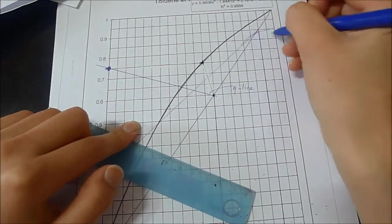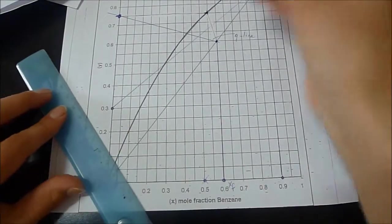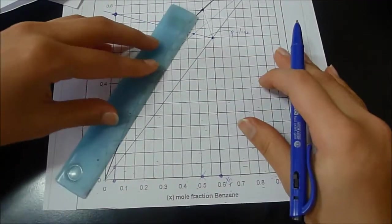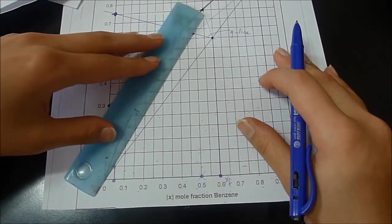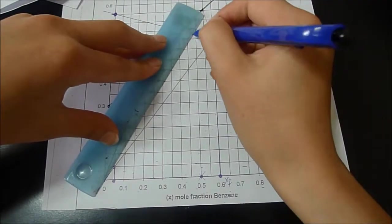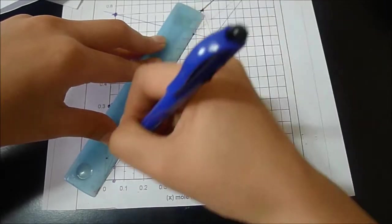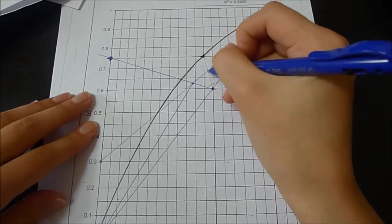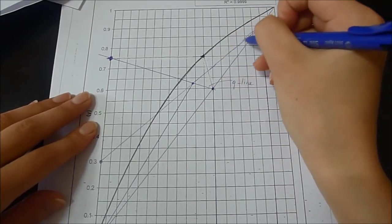This is our Q line, and this is our top operating line. Bottom operating line is quite easy since we know where to connect it. Here we have our operating lines. Now we are ready to draw our stages.